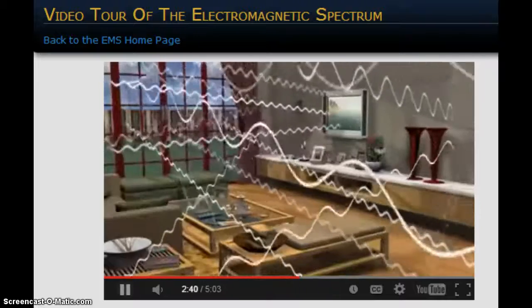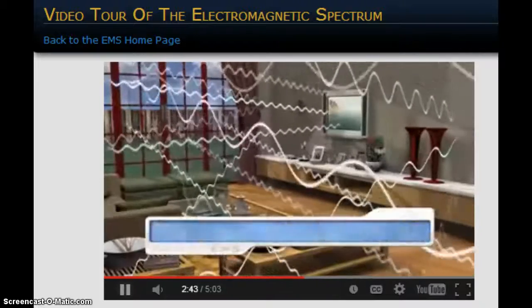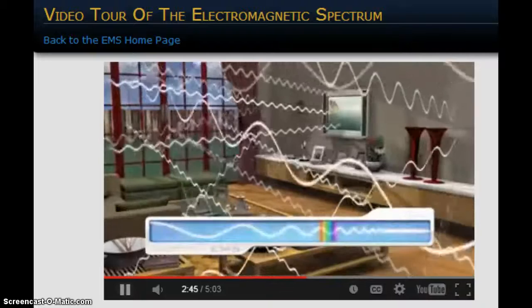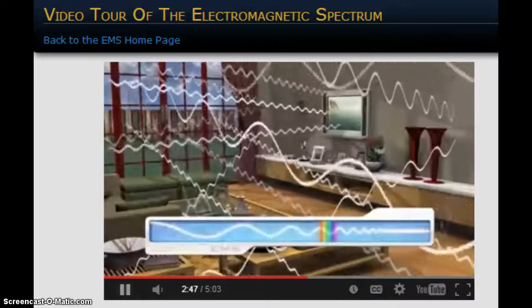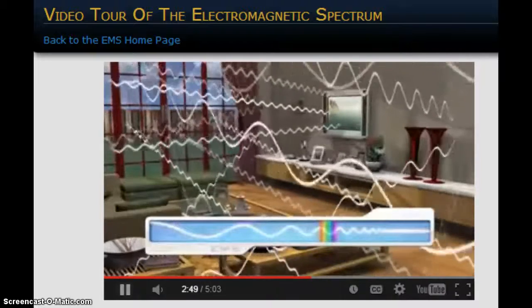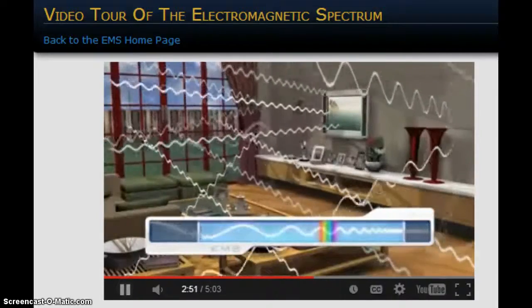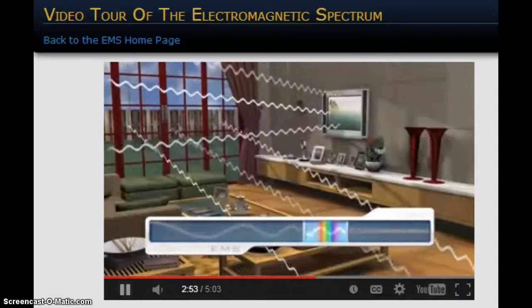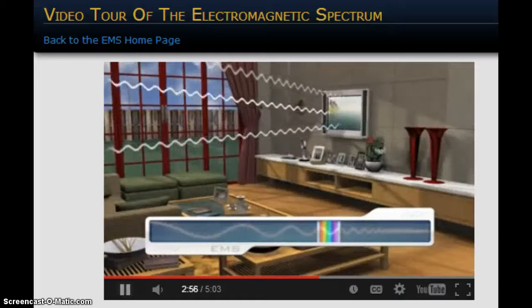With all these waves around you, how can you possibly watch your TV show? Similar to tuning a radio to a specific radio station, our eyes are tuned to a specific region of the EM spectrum and can detect energy with wavelengths from 400 to 700 nanometers, the visible light region of the spectrum.